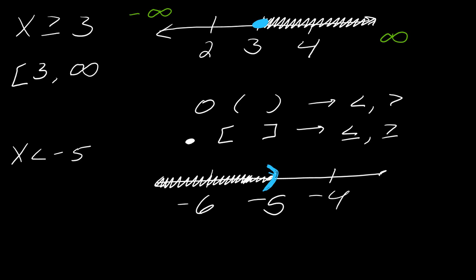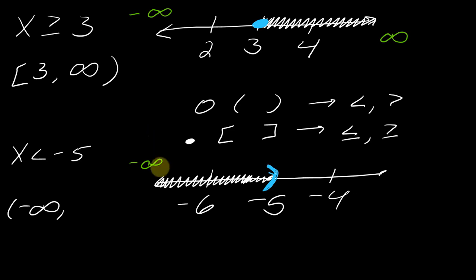Infinity is not a number, so we cannot use a square bracket for it. If you told me the largest number you could think of, I'd just add one to it and it would keep going — that's the philosophical nature of infinity. So the interval notation for x < -5 would be (-∞, -5), since negative 5 is not included and we start from negative infinity.